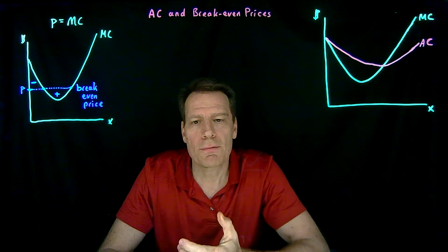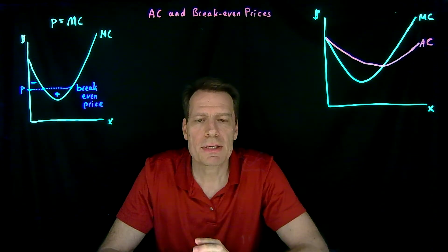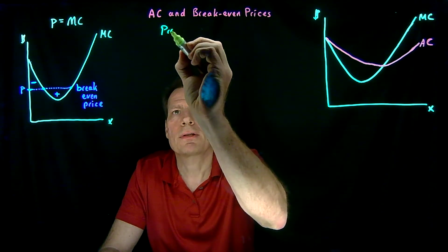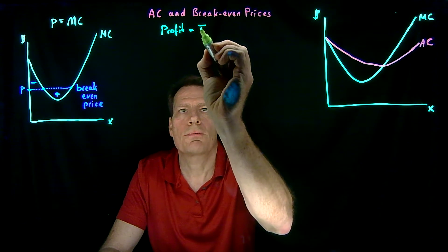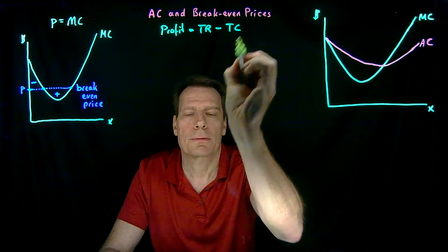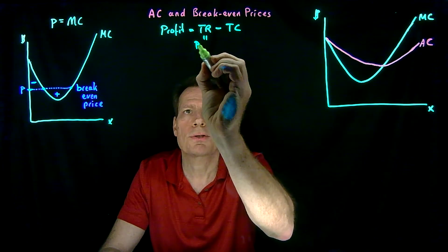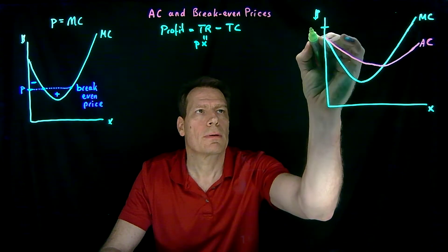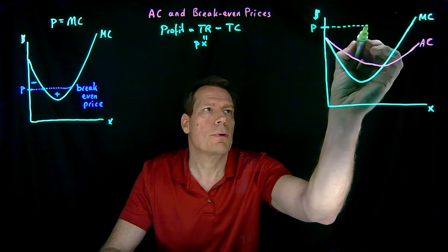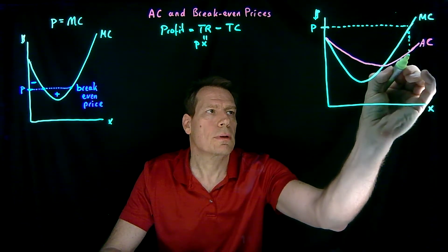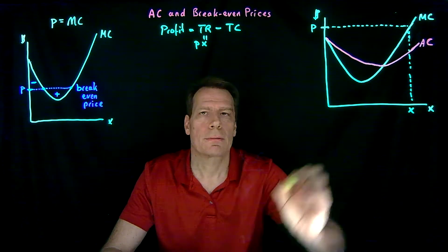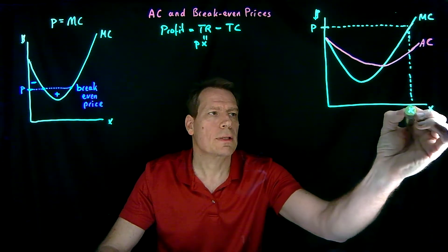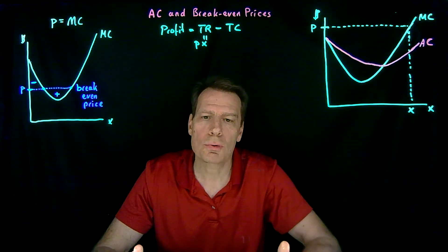Now that we've developed a way of including average costs in the picture, we'll have a second way of identifying the break-even price. We remind ourselves that profit equals total revenue minus total cost. Total revenue is simply the price charged times the number of units sold. If the price is at a given level, we know we'll produce where price equals marginal cost, giving us a specific quantity x. Price times quantity gives us a total revenue box shown in green.